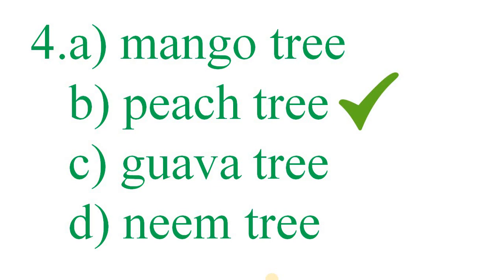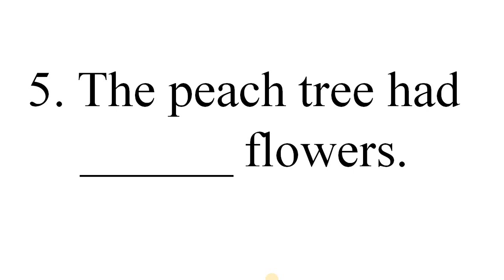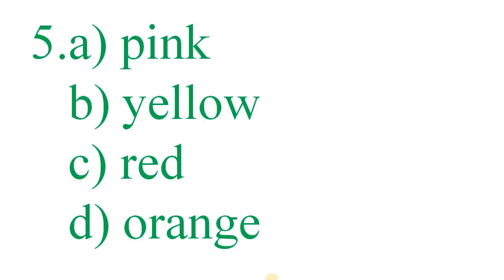Question number 5. The peach tree had dash flowers. Options are: pink, yellow, red, orange. And the correct answer is pink.